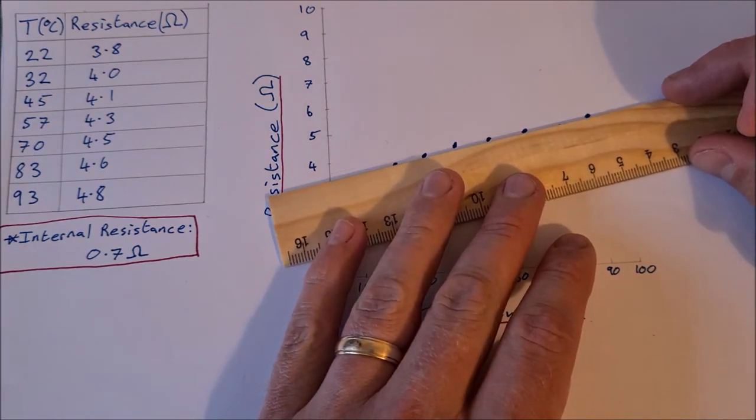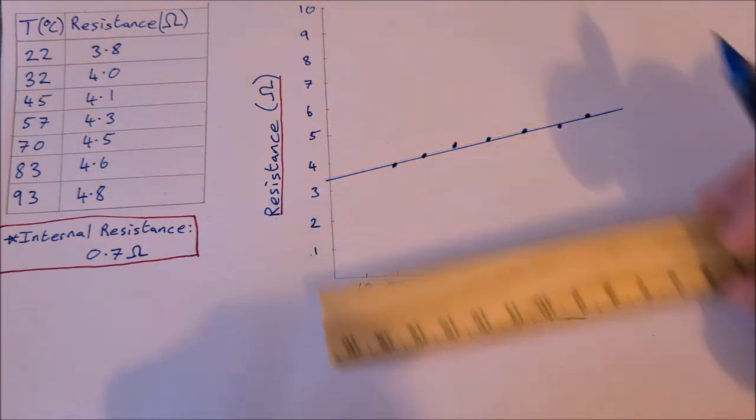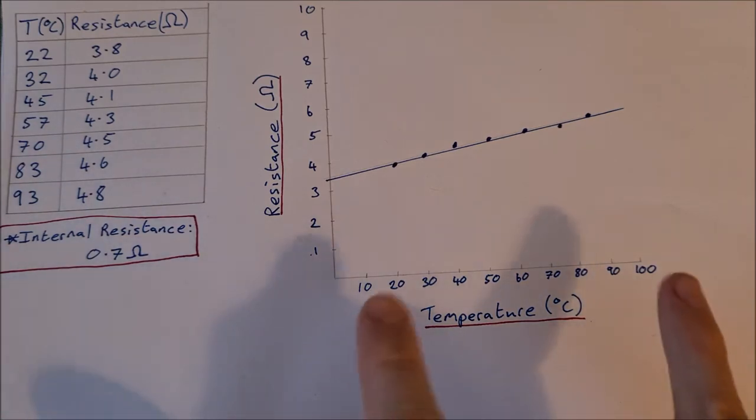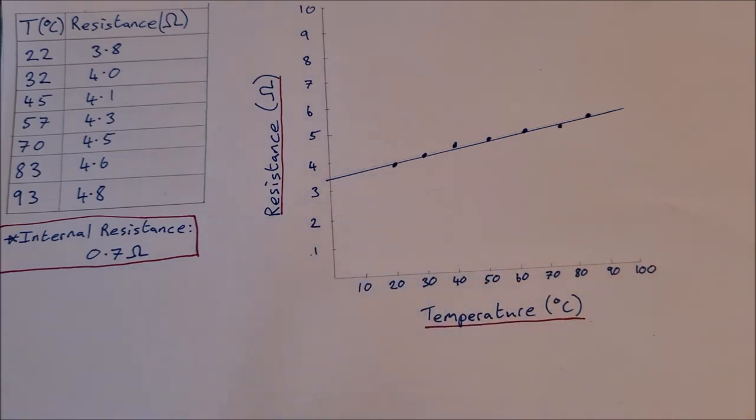If we draw a line of best fit through these we can see that it is pretty much a linear relationship. This tells us that the relationship between temperature and resistance for a metallic conductor, at least between 0 and 100 degrees Celsius, is a linear relationship and that the resistance changes linearly with temperature.